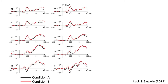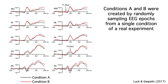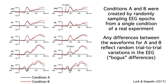Here's an example of a simulated experiment that makes this point. I took real data from a single condition in a single group of subjects and randomly divided the trials into two sets. I called these two sets of trials condition A and condition B, but the trials were just randomly divided. Any differences between the two conditions in the grand average waveforms are just random differences due to noise in the data.